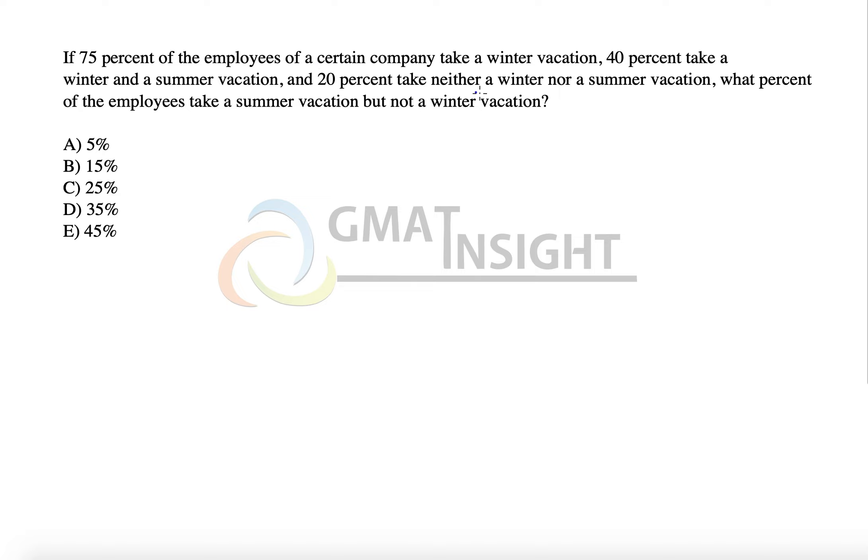If 75% of the employees in a certain company take a winter vacation, 40% take a winter and summer vacation. So it's about taking winter vacation, not taking winter vacation, taking summer vacation, not taking summer vacation. We have drawn a 2x2 grid to answer this question quickly.